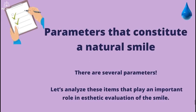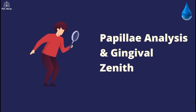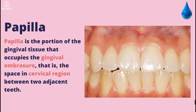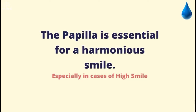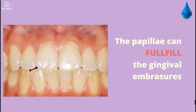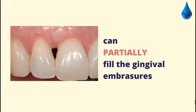There are several parameters that constitute a natural smile. Let's analyze these items that play an important role in aesthetic evaluation of the smile: papilla analysis and gingival zenith. The papilla is the portion of gingival tissue that occupies the gingival embrasure — the spacing in the cervical region between two adjacent teeth. The papilla is essential for a harmonious smile, especially in cases of a high smile line.